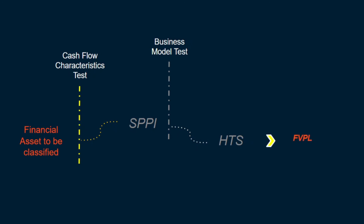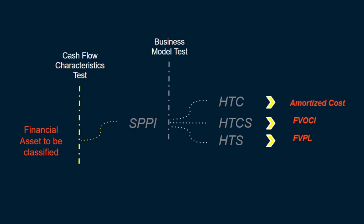If the same SPPI asset is held to collect and sell, we classify it as fair value through other comprehensive income. And if that SPPI asset is held to collect, we classify it as amortized cost. On the other hand, if the asset is non-SPPI, we simply classify it as fair value through profit or loss — we do not have to further pass it through the business model test.